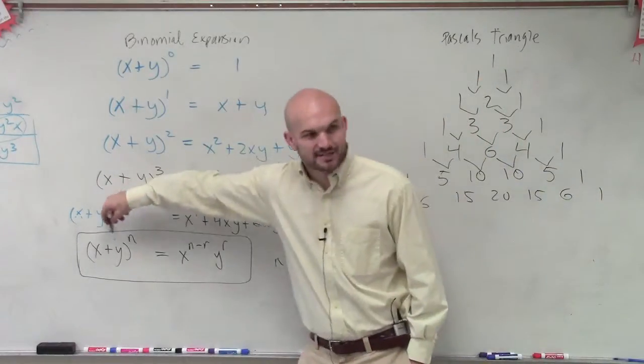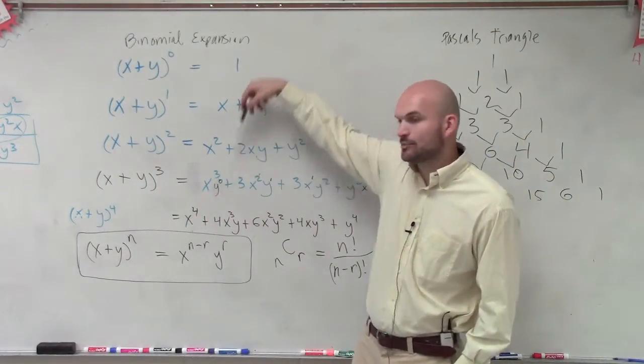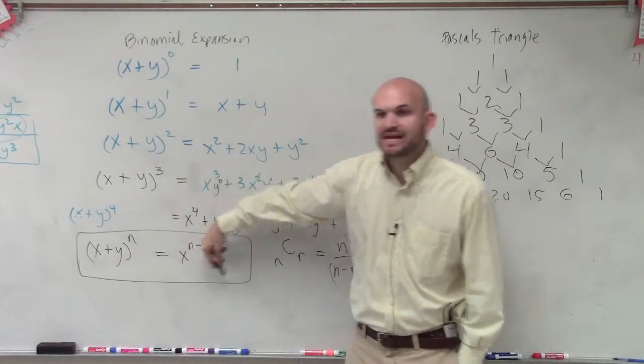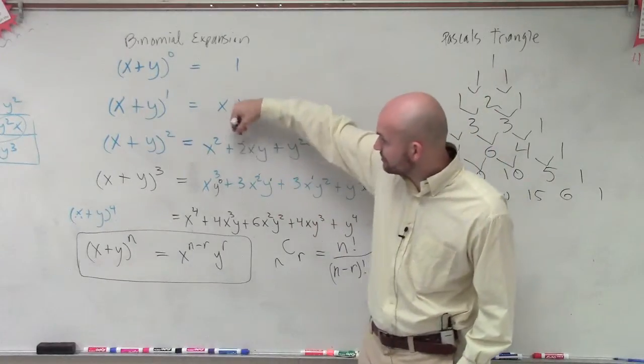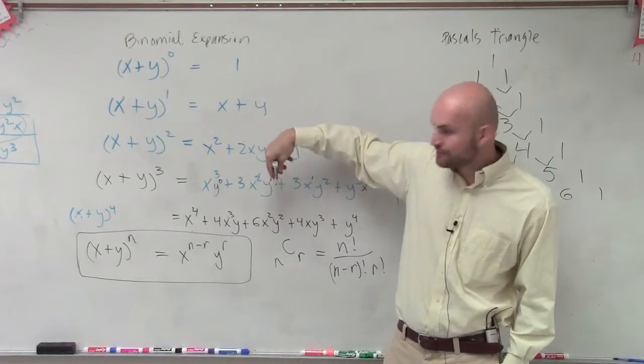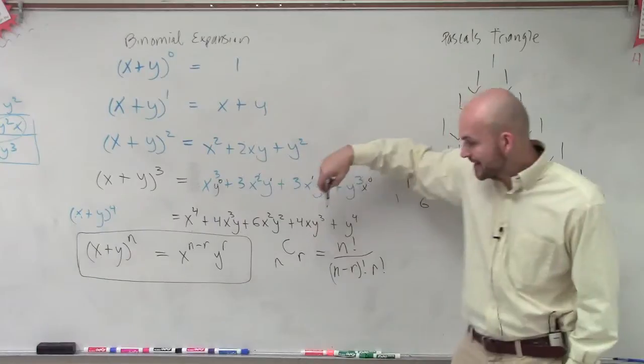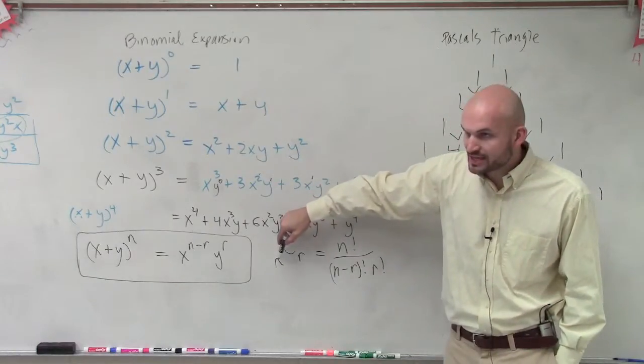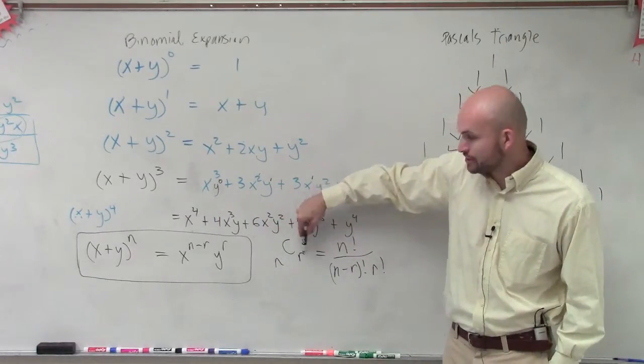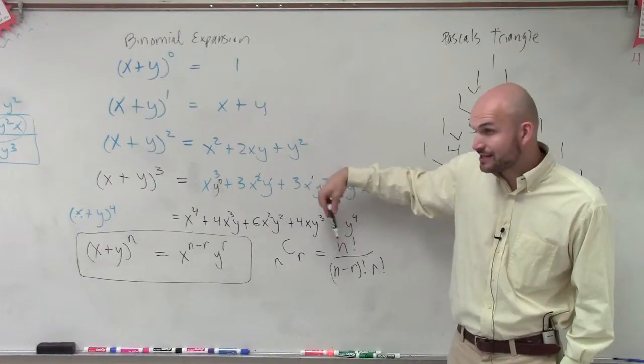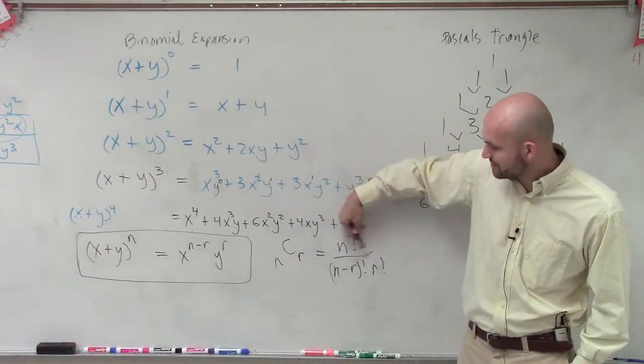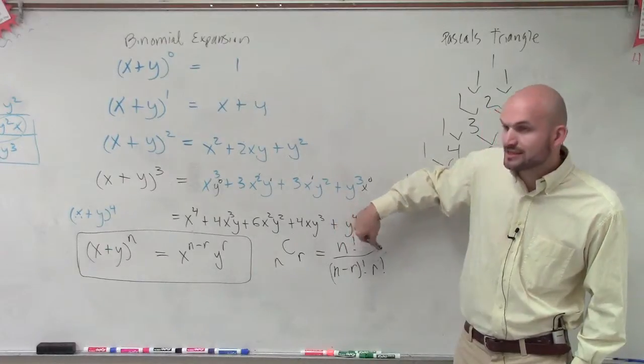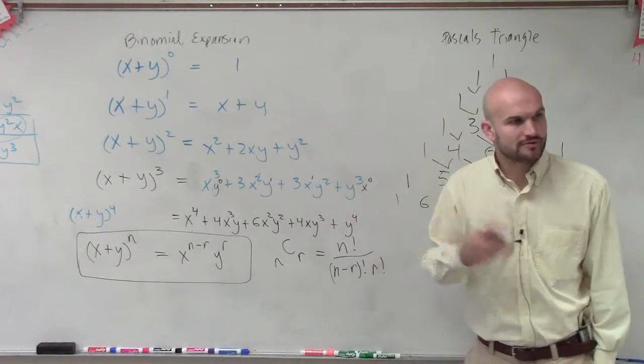We know that every single one of our terms in the binomial expansion can be represented in this format. If I want to find the numeric coefficient for a term that has n as your degree and r, then to find that numeric binomial coefficient, I take n factorial divided by (n minus r) factorial times r factorial. And we'll go through an example of that.